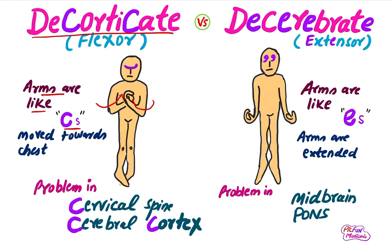So in decorticate rigidity, the arms are flexed towards the chest in the form of a C. In decerebrate rigidity, the arms are like an E — the arms are extended and they make the shape of the letter E.